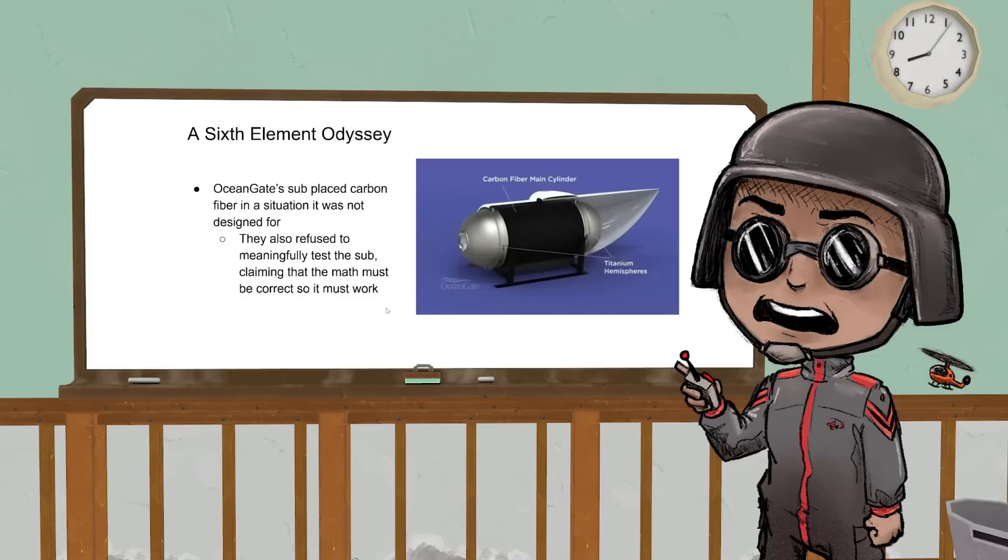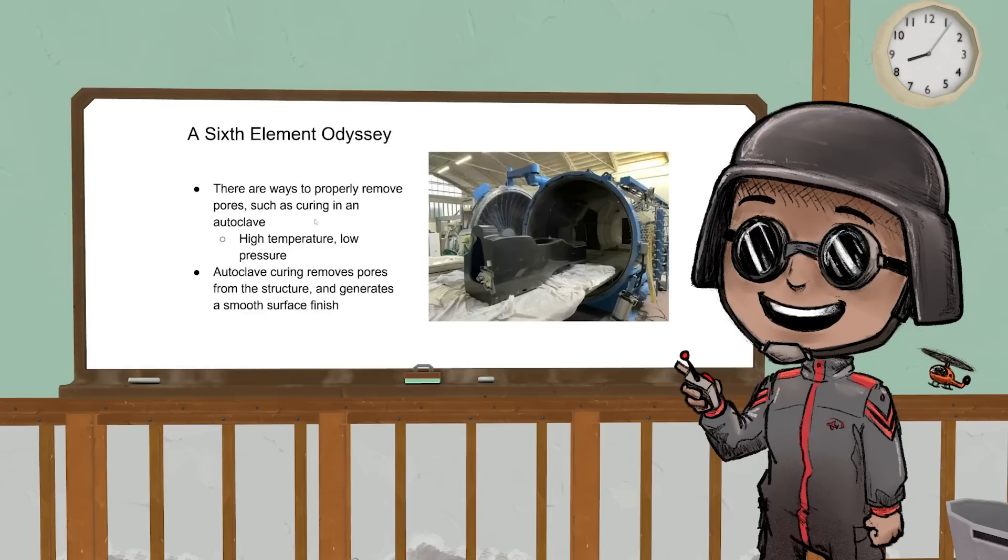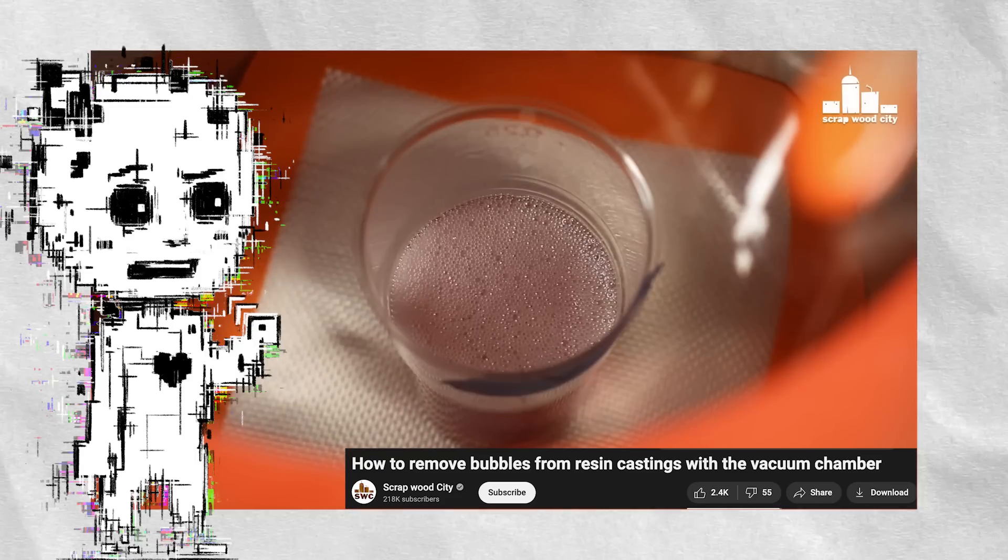There's a really big issue of something called porosity. That's where you get holes in your carbon fiber, places where the epoxy doesn't reach. This causes serious issues. There are ways to get rid of it—you can cure it in an autoclave. You take it to really high temperature and really low pressure. This means all the holes get pulled to the surface and pulled away, and now the holes are gone. They decided, 'I don't want to do that, it's too expensive,' so they put it in an oven.